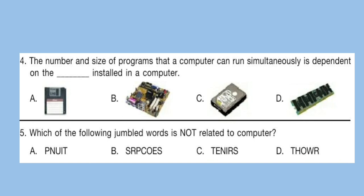Question 5: Which of the following jumbled words is not related to computer? The correct answer is option D. If you unscramble these jumbled words: A becomes 'input', B becomes 'process', C becomes 'insert', and D becomes 'worth'. So 'worth' is not related to computer.